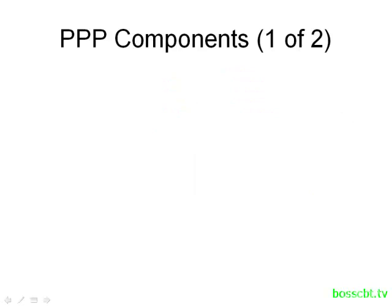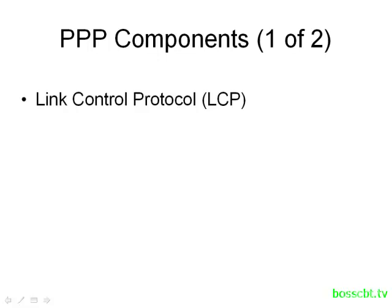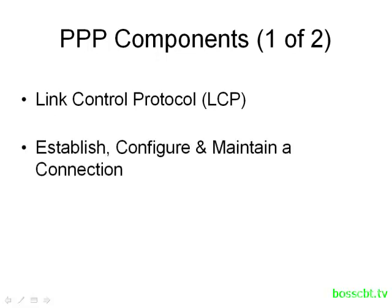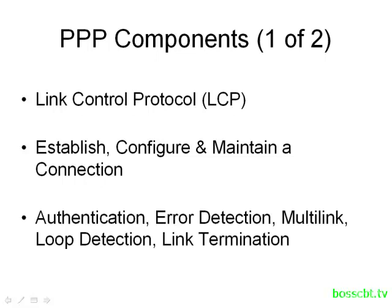To really understand PPP, we need to look at what makes it up. There are two main components. The first is LCP, or Link Control Protocol. LCP does a lot of the basic work in PPP — it's responsible for establishing the link to the far-end router, negotiating configurations and parameters, maintaining the connection, and terminating it when needed. LCP is also where many PPP features are located, such as authentication, error detection, multi-link load balancing, and loop detection.